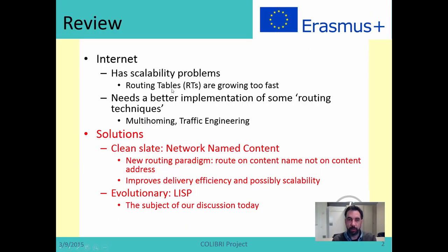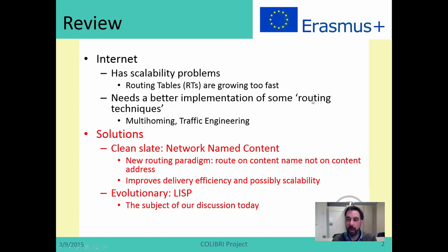As we recall from the previous lesson, we are having scarcity issues on the internet with routing tables. The main reason behind this is not that the internet is becoming very large, but that we have many issues with multi-homing and traffic engineering practices, which are adding a lot of entries into routing tables. What we need is a better implementation of multi-homing and traffic engineering, and this is what LISP is trying to solve.